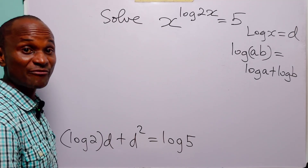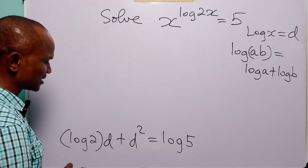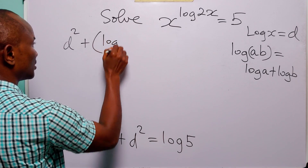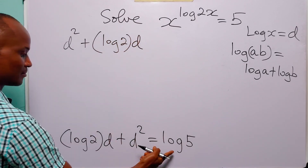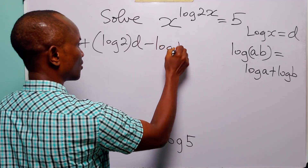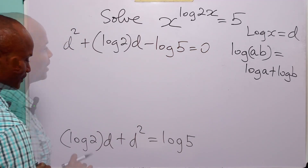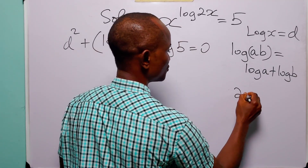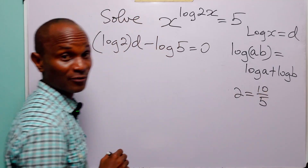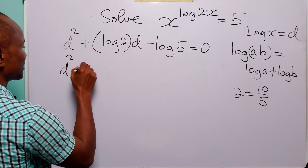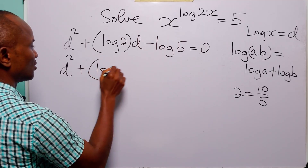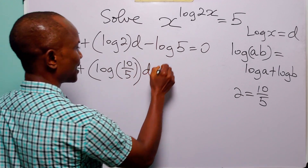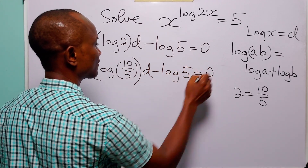Here you can see that we have a quadratic equation. Let us rearrange it: we have d squared plus log 2 times d minus log 5 is equal to 0. Now remember that 2 is equal to 10 over 5, so we can write this as d squared plus log(10/5) multiplied by d minus log 5 is equal to 0.